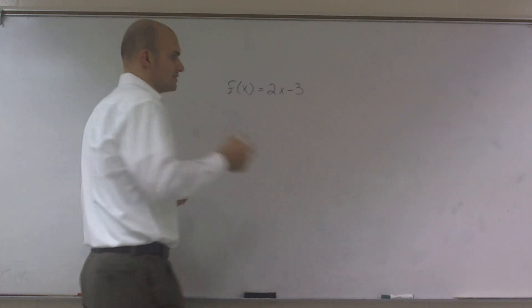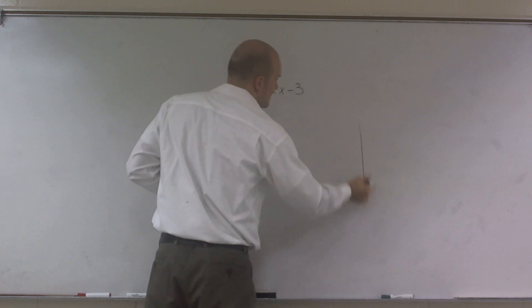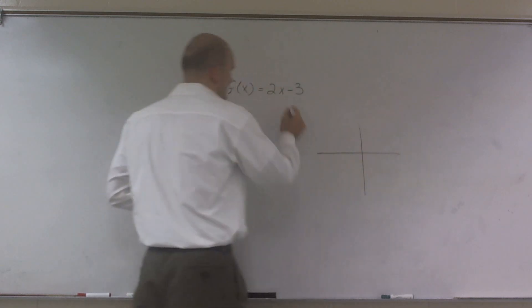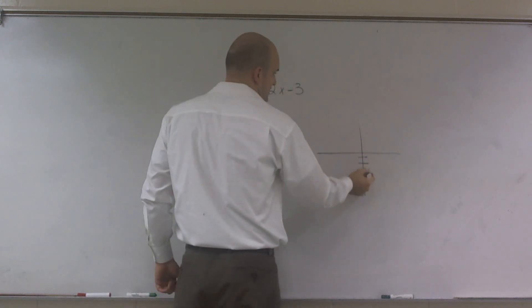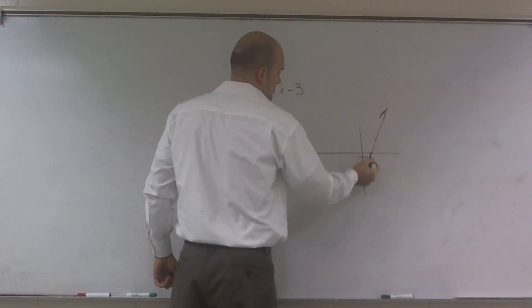So first of all, let's go ahead and take a look at what this graph would look like. And if I was going to write this up, that would mean a y-intercept of negative 3, and it goes up over 2 is my slope. So roughly, my graph is going to look something like this.